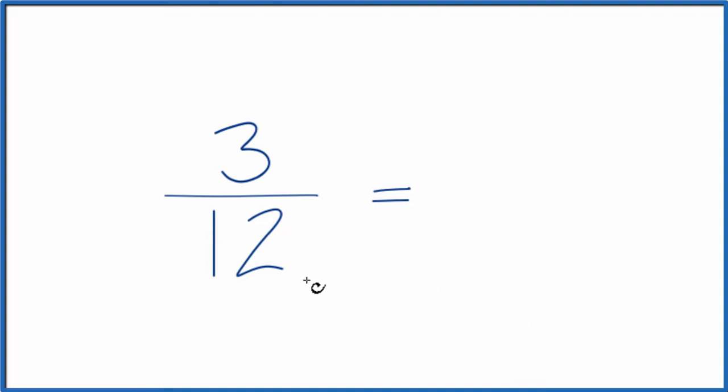For 3 twelfths, we could just simplify it starting out. So 3 goes into 3 one time, and it goes into 12 four times. So 3 twelfths, one of the equivalent fractions, would be 1 fourth.